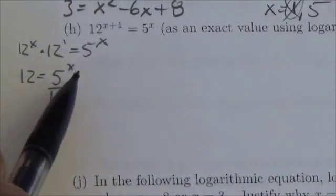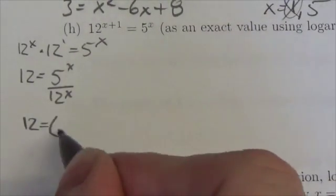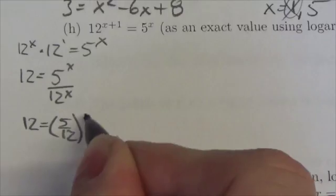These are both being taken to a power of x and so this is the same as 12 equals 5 twelfths to the x.